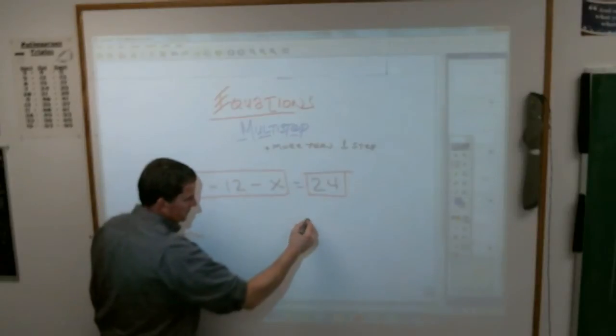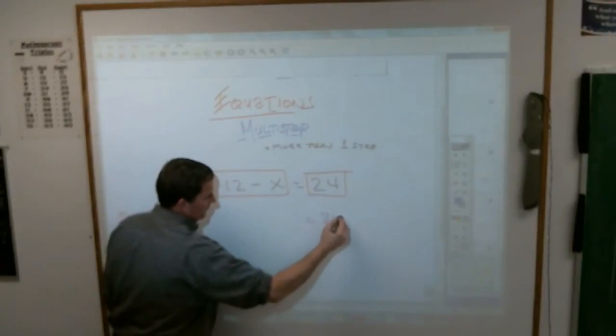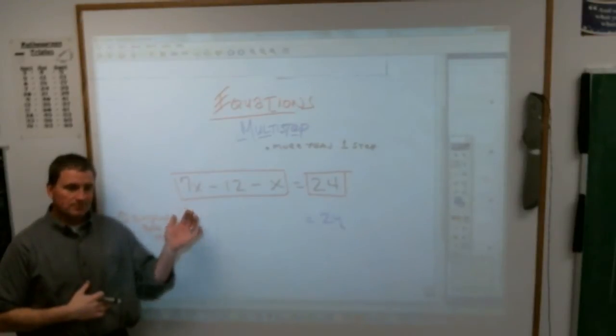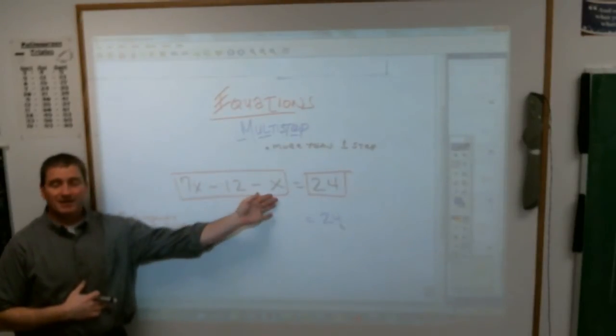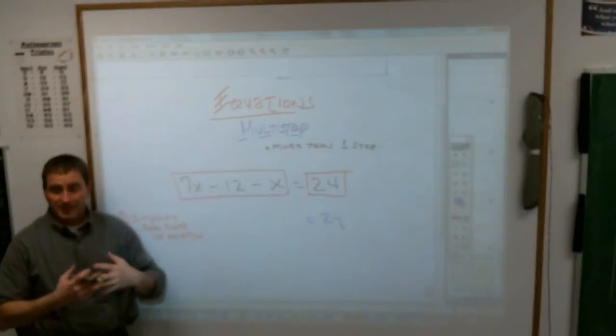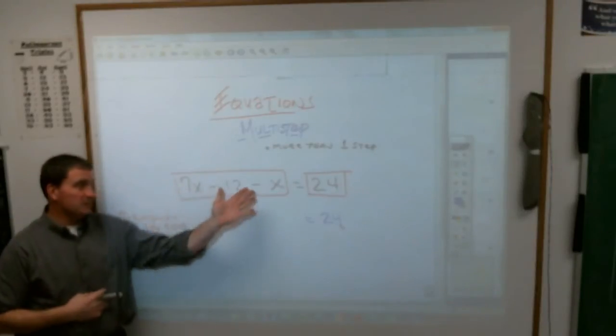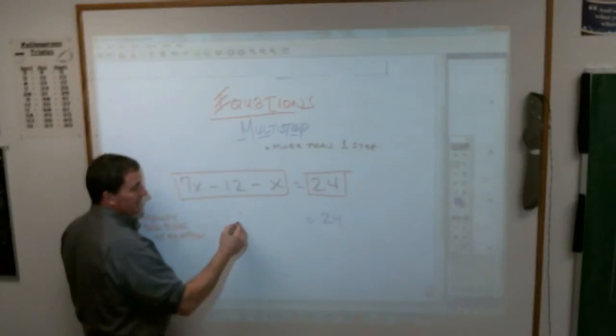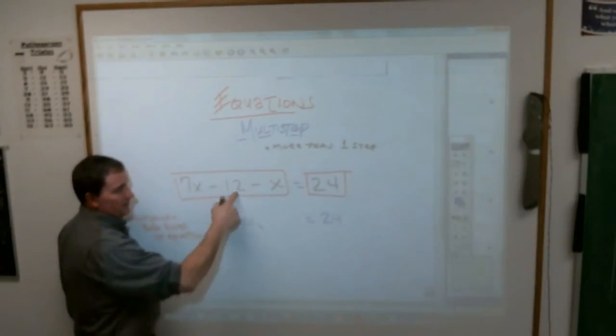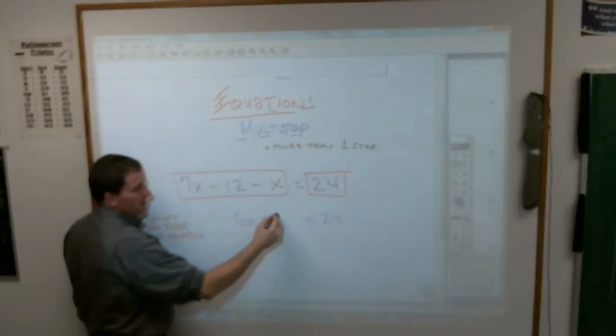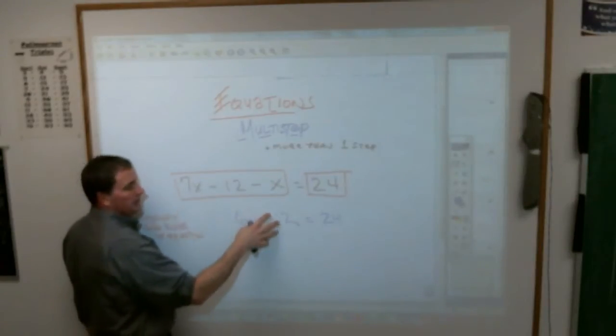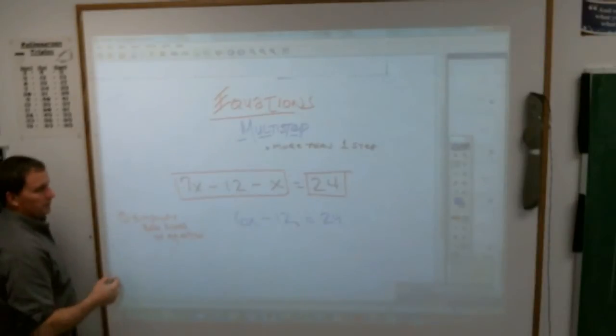Can I make it easier just by combining them? Well, 24 is all by itself, so there's really not anything you're going to do over there. But over here, looking for like terms, what do I see? I have a 7x and a minus x. I can put those together. If I have 7x's and I take an x away, I'm left with 6x's. I can't, right now, do anything with that minus 12. So this thing, first of all, changes to this equation.